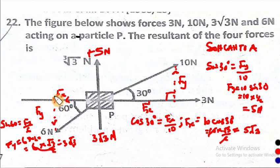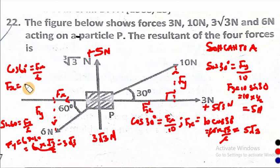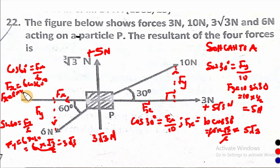Now let us resolve this other force horizontally again. Remember, this one will now be 3 newtons plus 5 root 3 newtons on that side. So we say adjacent upon hypotenuse, because this is the opposite. We say cos 60 degrees will be adjacent Fx upon hypotenuse 6. We have that Fx equals 6 cos 60. Cos 60 is just half, so it will be 6 times half. So Fx will be 3 newtons.